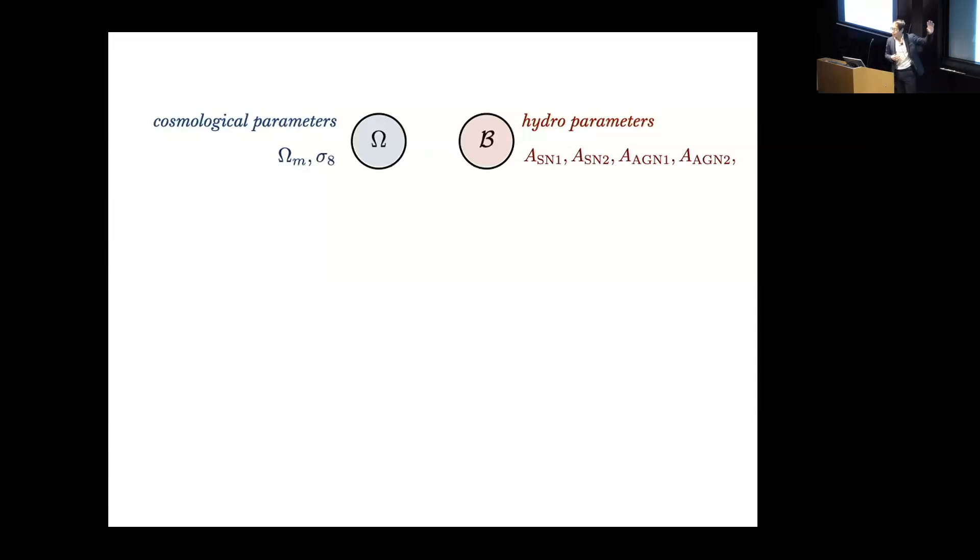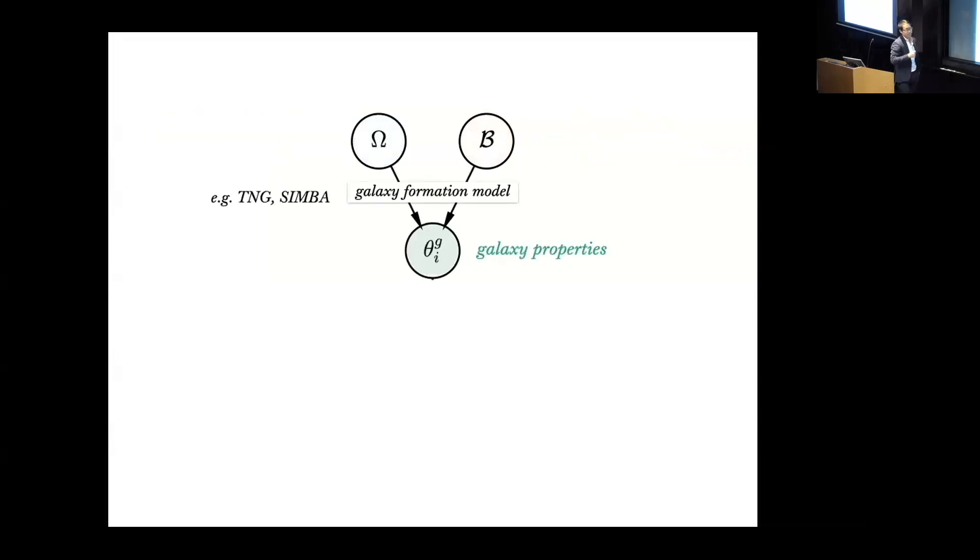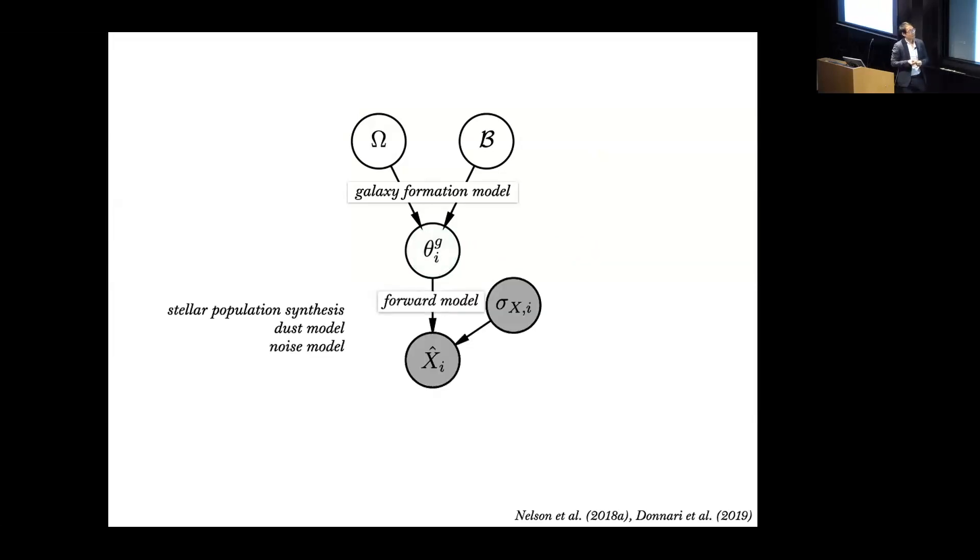Let me take a step back and take a look at the CAMELS simulations. CAMELS takes these input parameters which are the cosmological parameters omega matter and sigma eight and also the hydrodynamical parameters that dictate the supernova and AGN feedback. You put these parameters into some galaxy formation model like TNG or Simba and they produce the galaxy properties I mentioned earlier. But we can actually go a step farther than CAMELS and forward model the actual observables from these galaxy properties. For example, we can use stellar population synthesis and go from the star formation histories and the chemical enrichment histories to the SEDs of galaxies, apply dust attenuation to the SEDs, and then apply some realistic noise to get photometry, forward model photometry of all of the CAMELS galaxies.